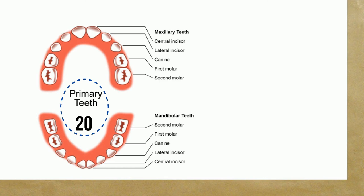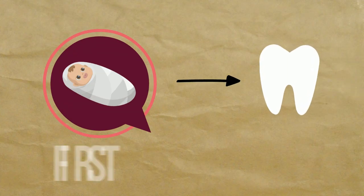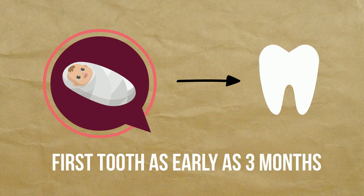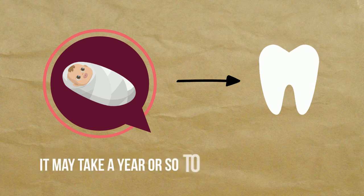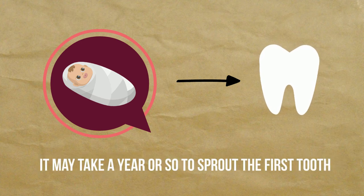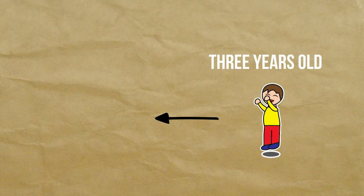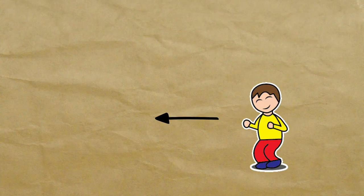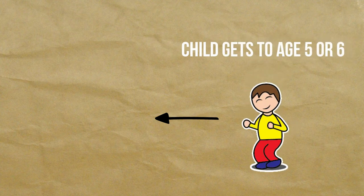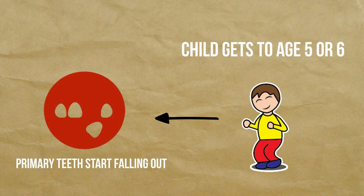Between six and ten months of age, most infants begin to sprout their primary teeth, but this varies depending on the child's development. If the baby is an early developer, it may sprout the first tooth as early as three months. If the baby is a late bloomer, it may take a year or so. By the time a child reaches three years old, most primary teeth should be present.